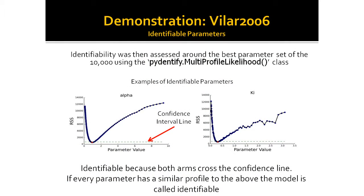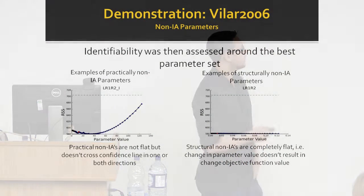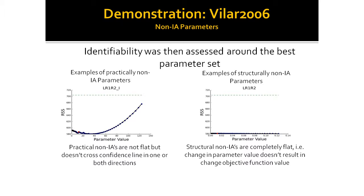I then used identifiability analysis to assess the profile likelihood of these parameters — not showing all of them as there are 14 parameters in the model. These two are examples of identifiable parameters. They're identifiable because both arms in both directions cross the confidence interval line. If all parameters in your model have a profile similar to this, your model is called identifiable. This model also has non-identifiable parameters. On the left we have a practical non-identifiability because the profile isn't flat but doesn't extend above the confidence interval line in one or both directions. On the right we have a structural non-identifiability — the profile is completely flat, meaning a change in the parameter value doesn't contribute to a change in the objective function.